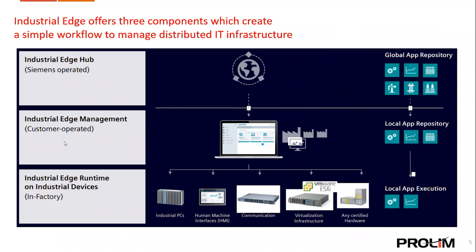There are three layers in the Siemens Industrial Edge system. The first is the Industrial Edge devices — the base layer — which interacts with the machine, PLC, or controller. The second is Industrial Edge Management, where you control the Edge device. The third is the Industrial Edge Hub.